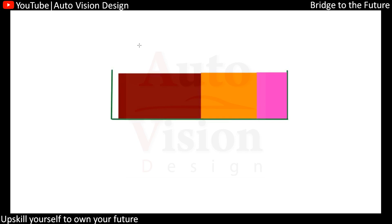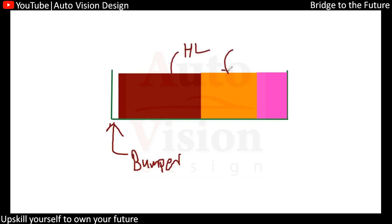The same thing will be happening in automotive as well. Suppose this will be a bumper — you can find this will be the headlamp, this will be some grill part, and this will be another, we can say, the basal kind of part. These are nothing but the three parts fitting into the bumper.